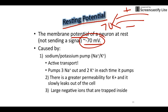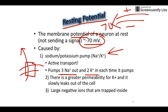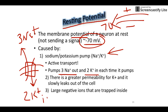There are three things that cause the resting potential. The first and most important is the sodium-potassium pump, which pumps three sodium out for every two potassium in. Three positive charges going out, only two going in — that starts making the outside positive and the inside negative.